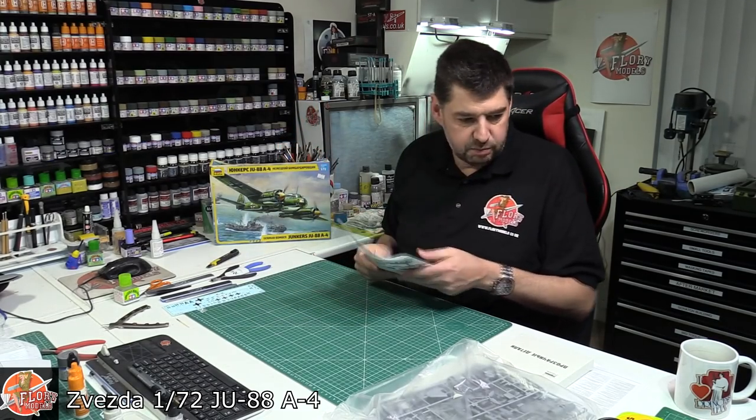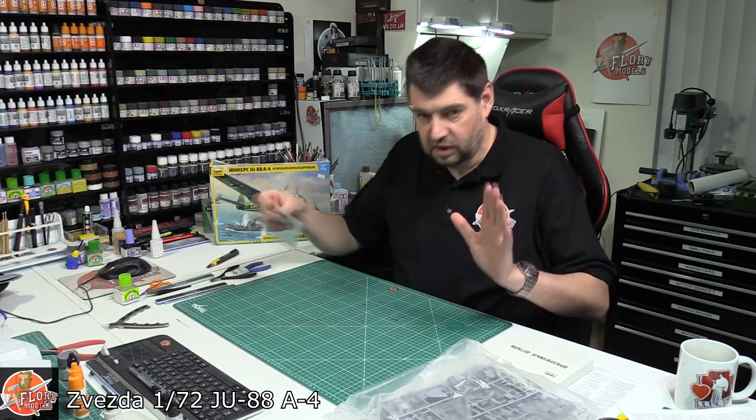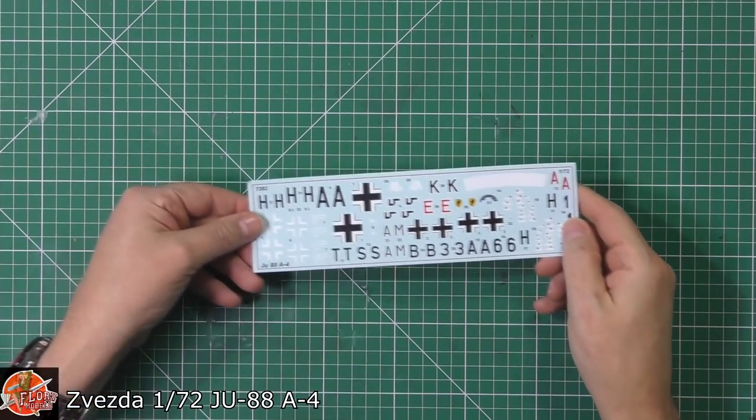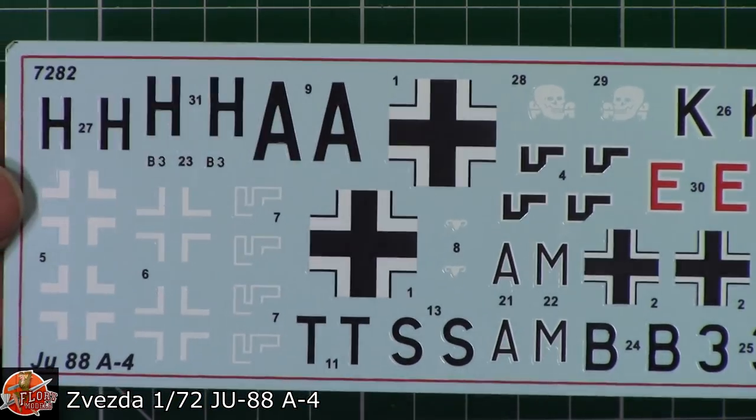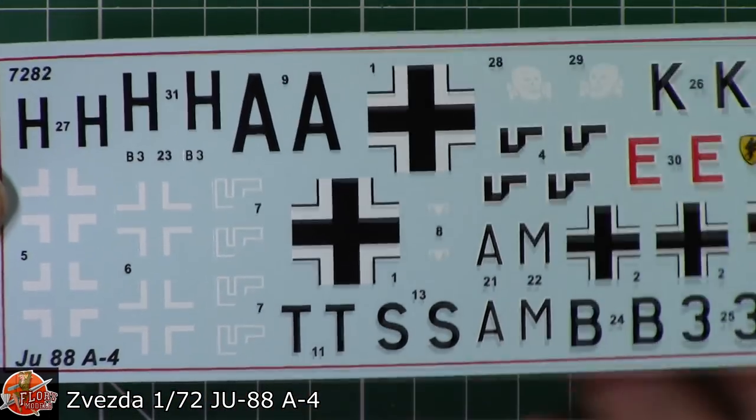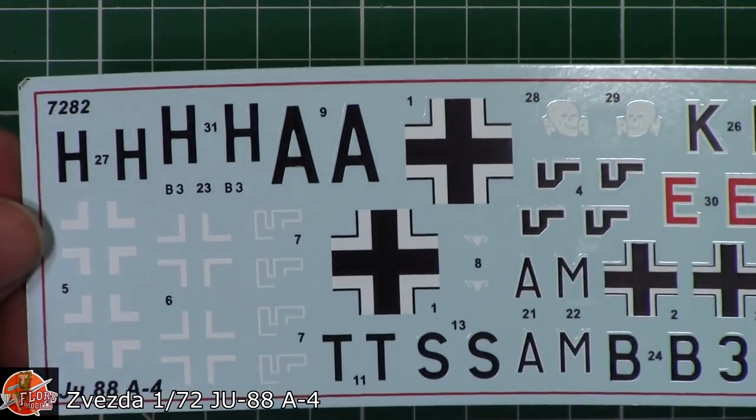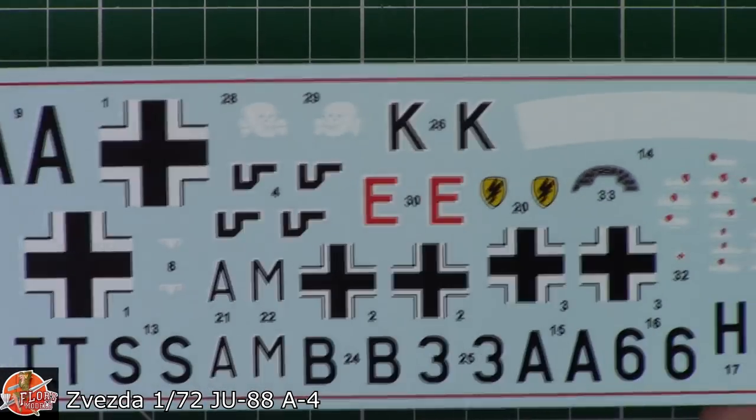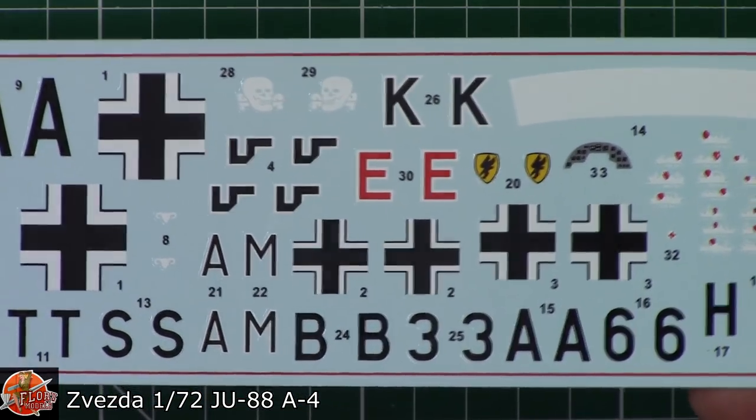I can't believe I haven't built a JU-88 and everything I've built, so I haven't done one. I'm going to have to take care of that soon. Decals, as you can see, there's the normal way. They've broken down the swastika, obviously, just to get around the problem of, well, lots of problems. I'm not going to go into the details of that one.